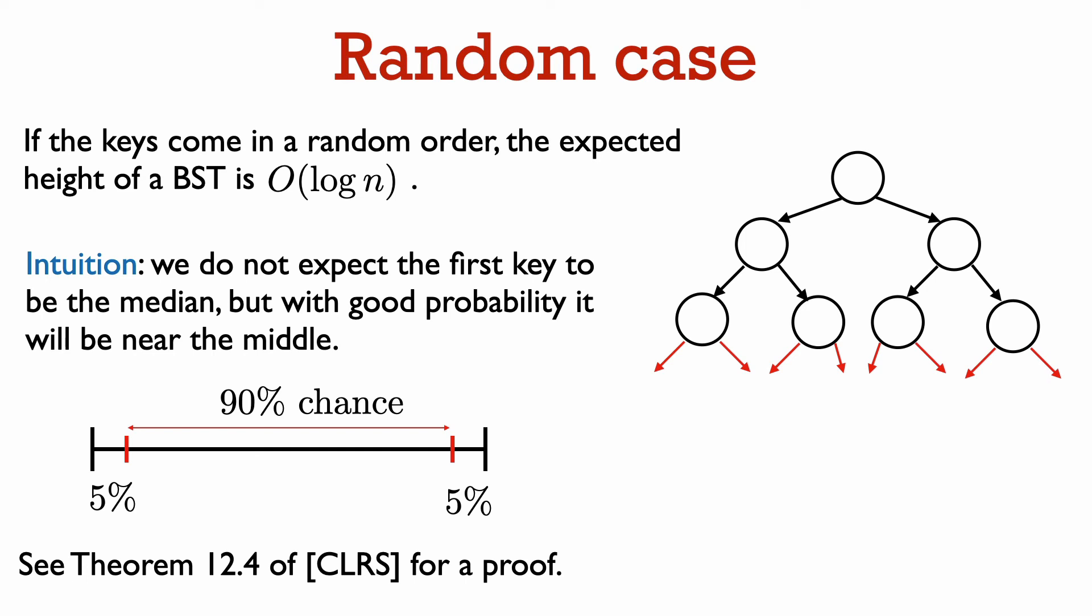For example, with probability at least 90% when the keys are chosen randomly, the first key to be inserted won't be in the 5% of the smallest keys or in the 5% of the largest keys.